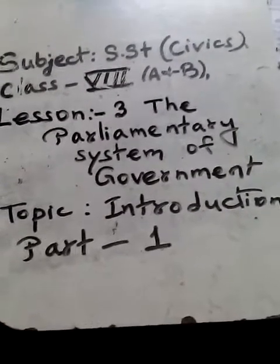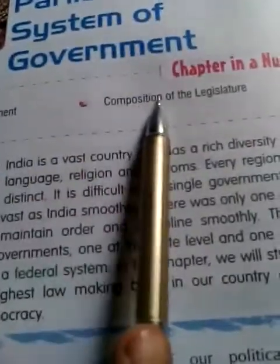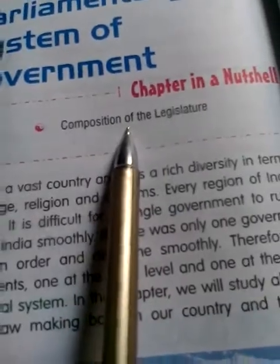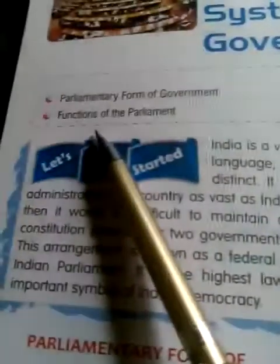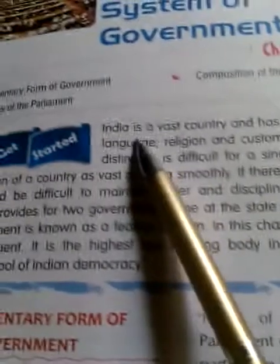The chapter is on the parliamentary form of government — the parliamentary system of government. We will look at the composition, nature, and functions of the Parliament.